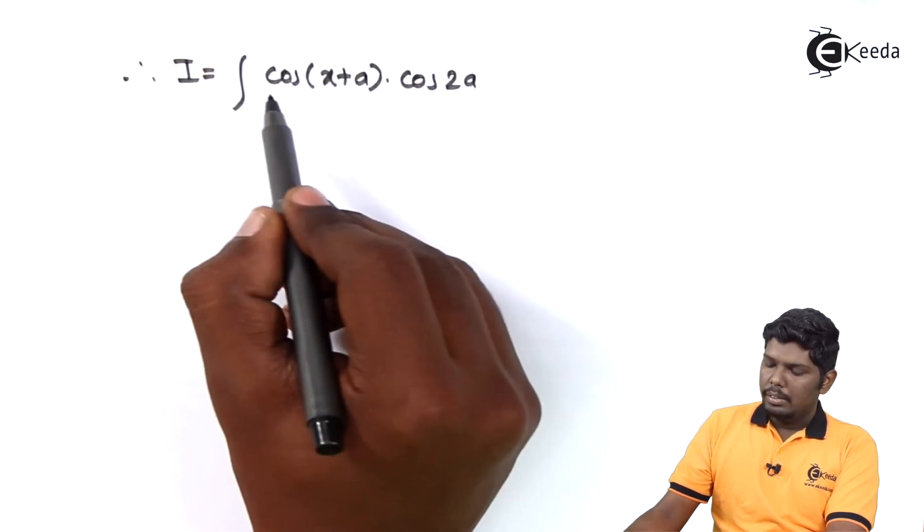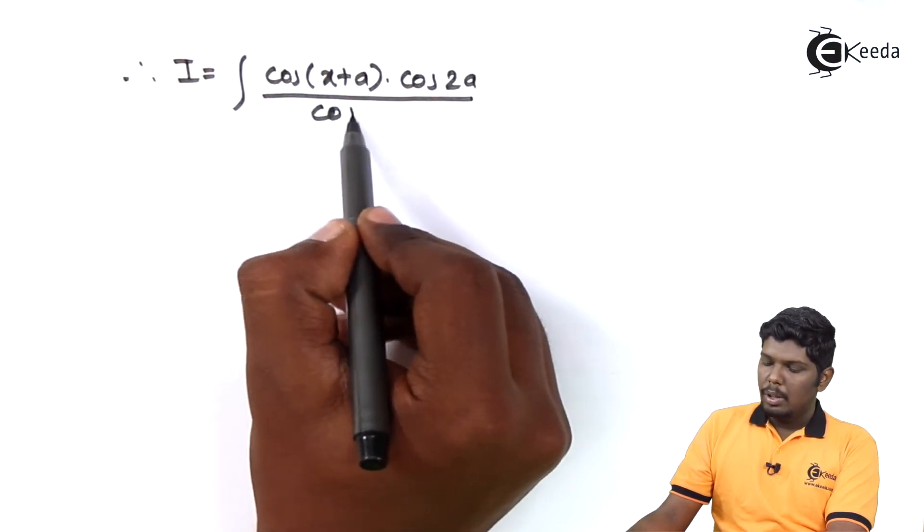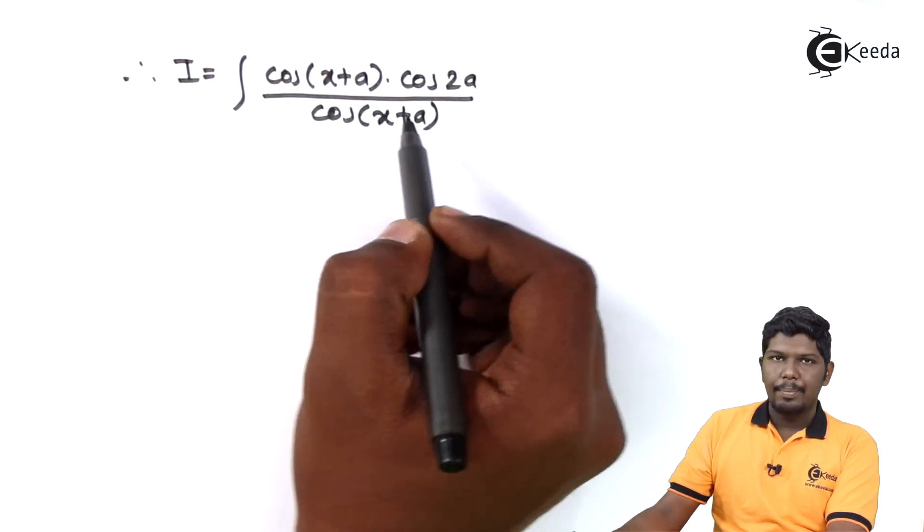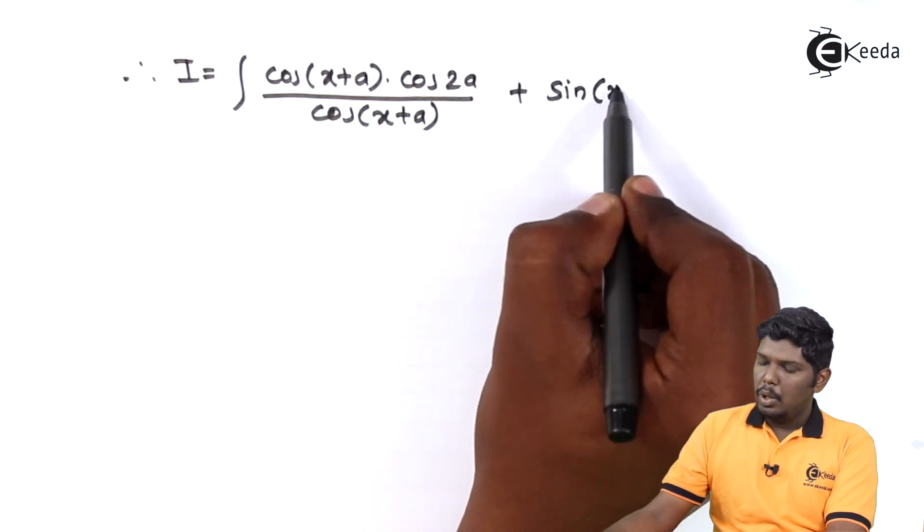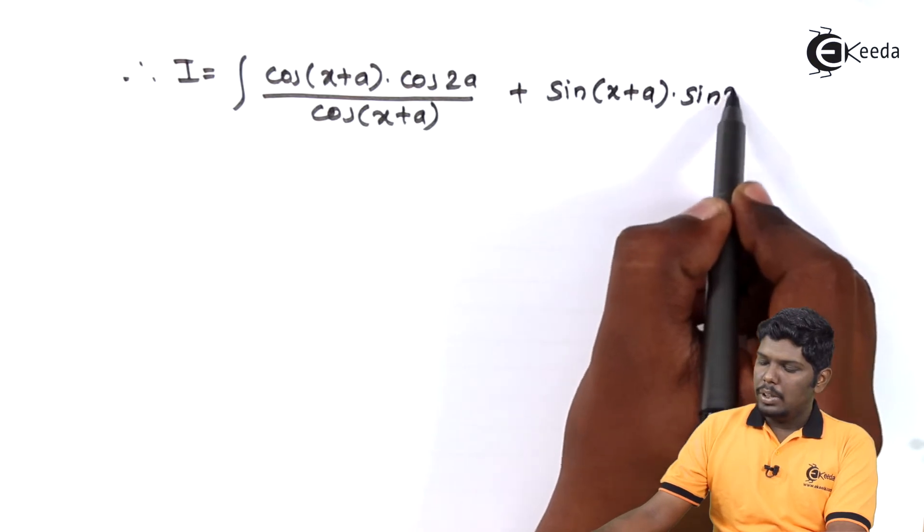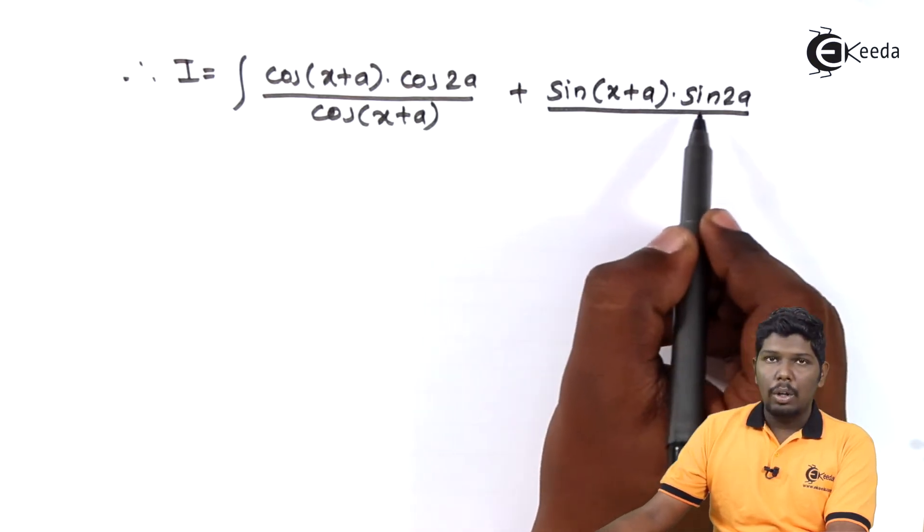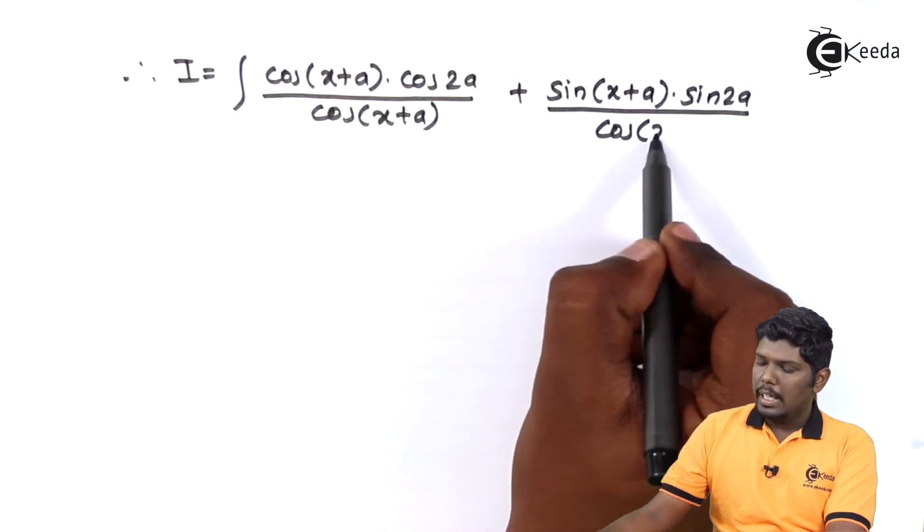plus sin of x plus a into sin 2a upon cos(x+a).